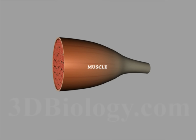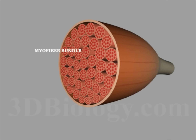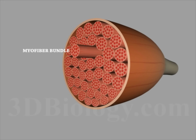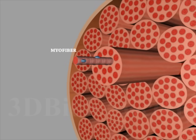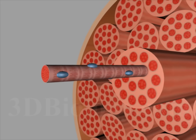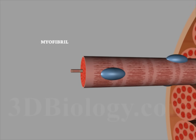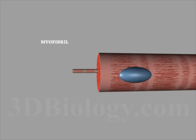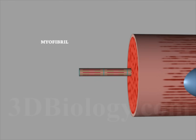Striated muscle is made up of bundles of multi-nucleated muscle cells, called myofibers. A myofiber is packed with myofibrils that extend the length of the cell.